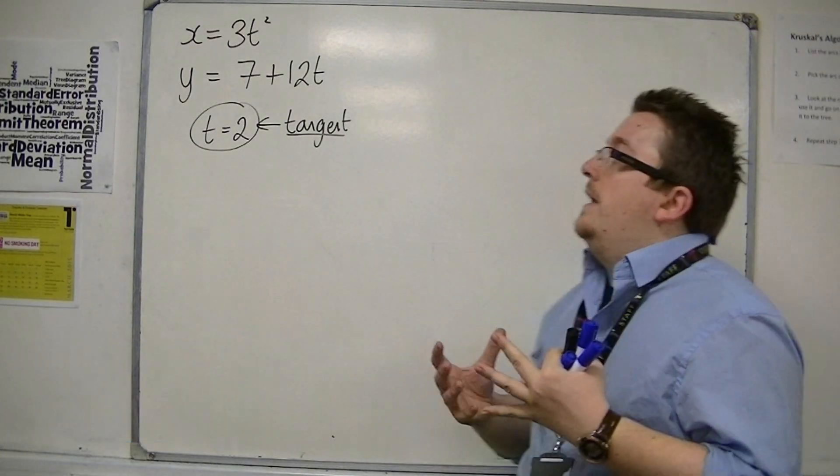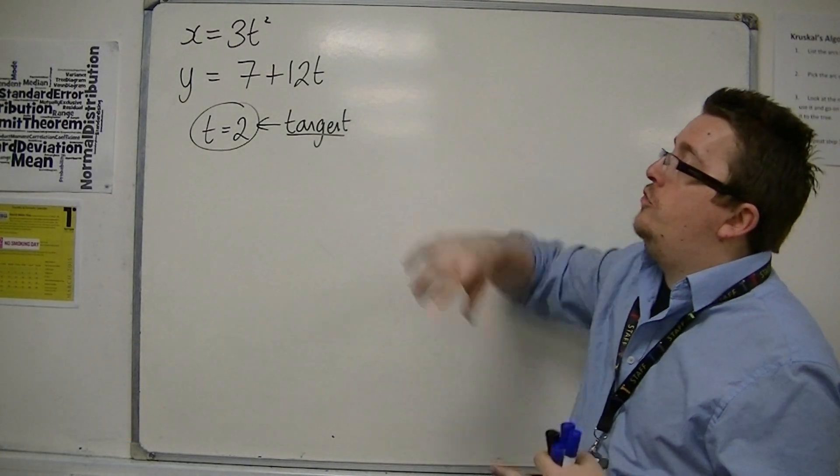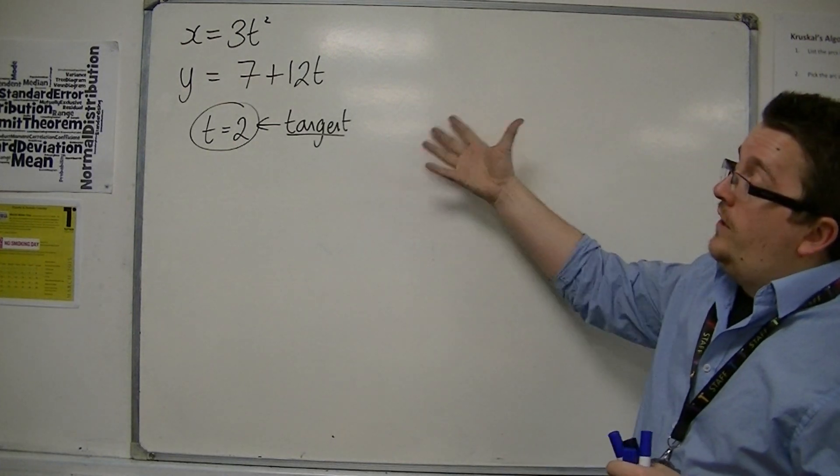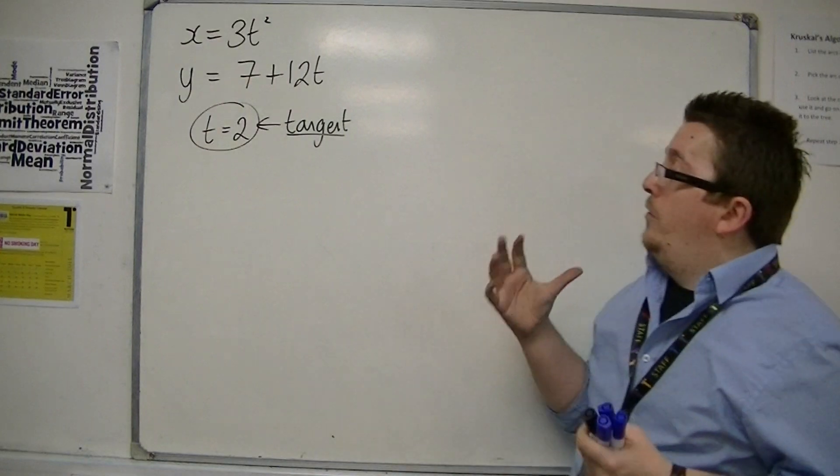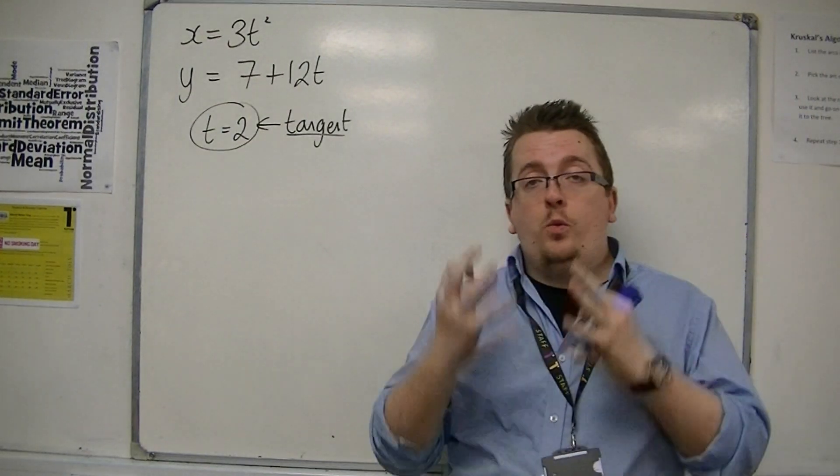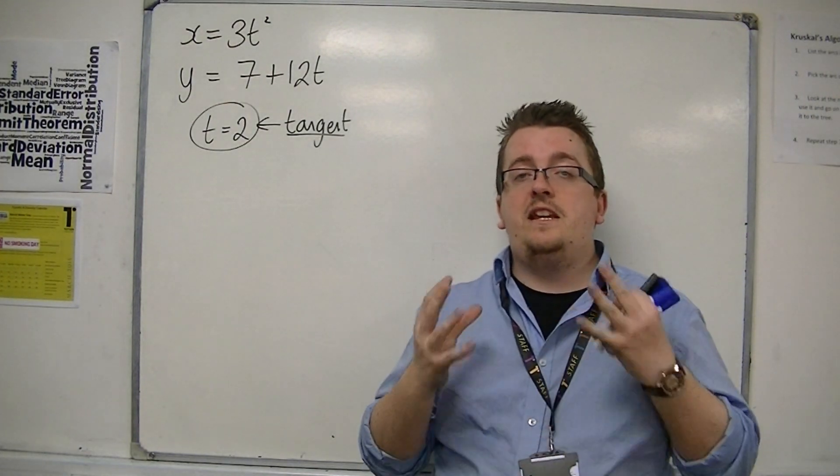In this video, what we're going to be looking at is going from the parametric equations, where x equals 3t squared and y equals 7 plus 12t. And what I want to do is I want to find the equation of the tangent when t is equal to 2.